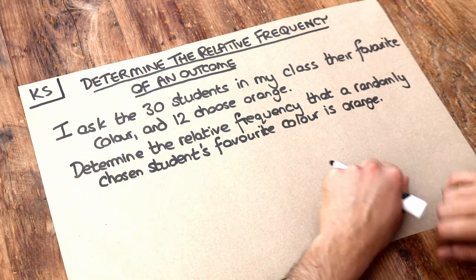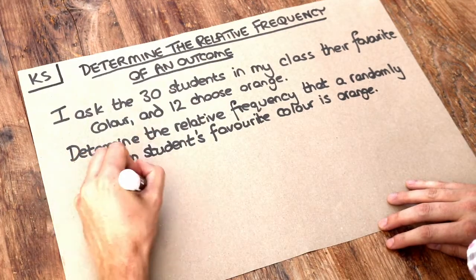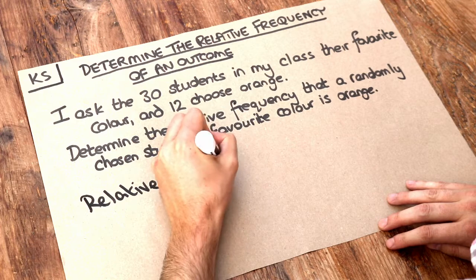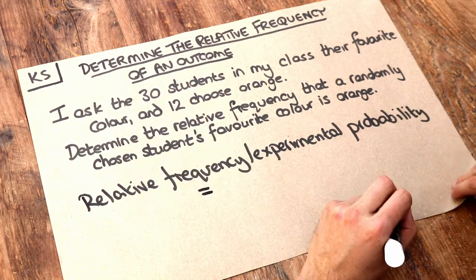Now let me define what relative frequency means. Relative frequency, also known as experimental probability, just means the proportion of the time that we expect something to happen.